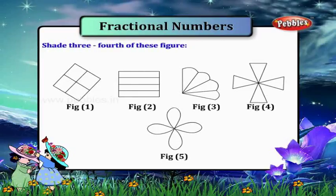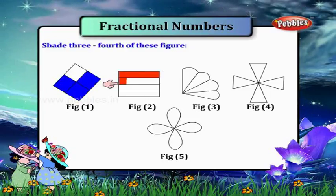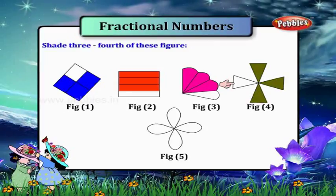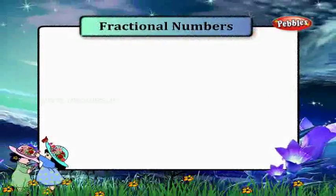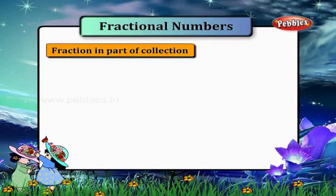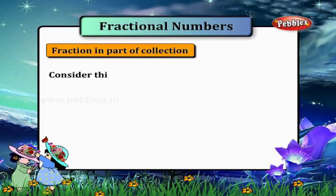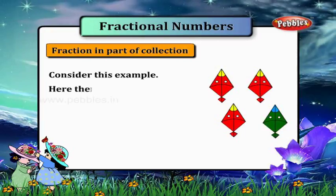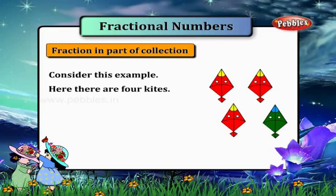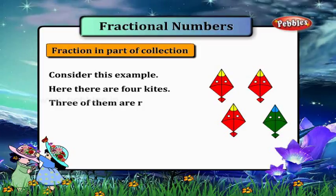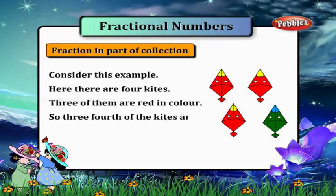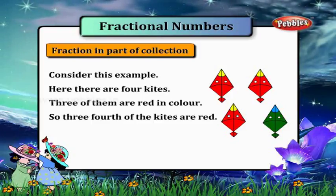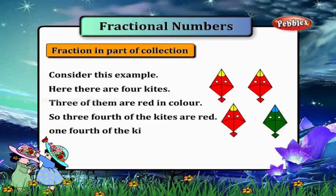Shade three fourth of these figures. Figure one, figure two, figure three, figure four, figure five. Fraction as part of collection. Consider this example. Here there are four kites. Three of them are red in color. So three fourth of the kites are red and one fourth of the kites are green.